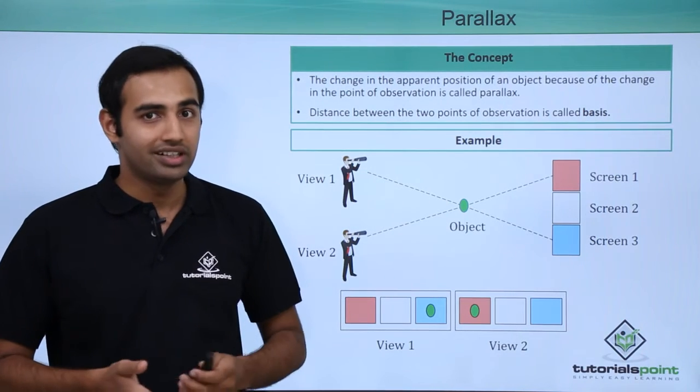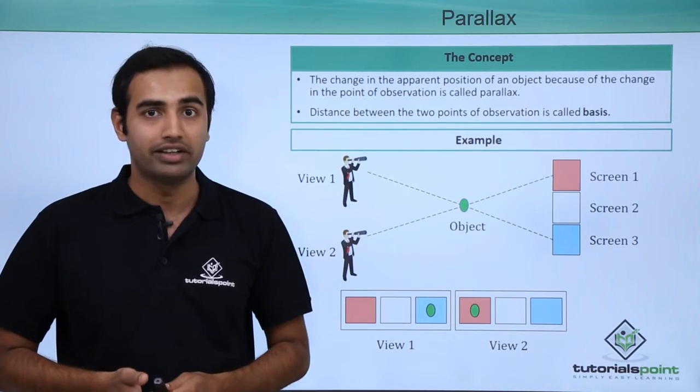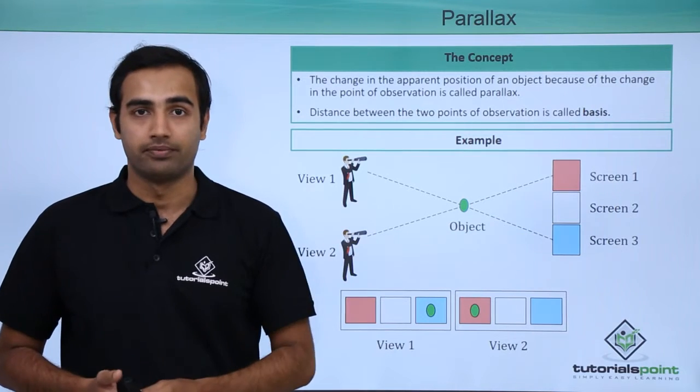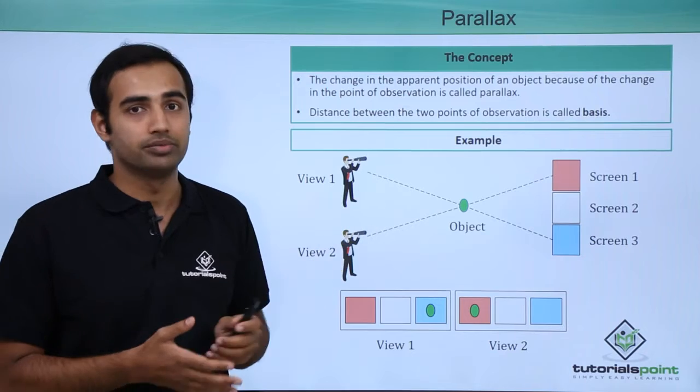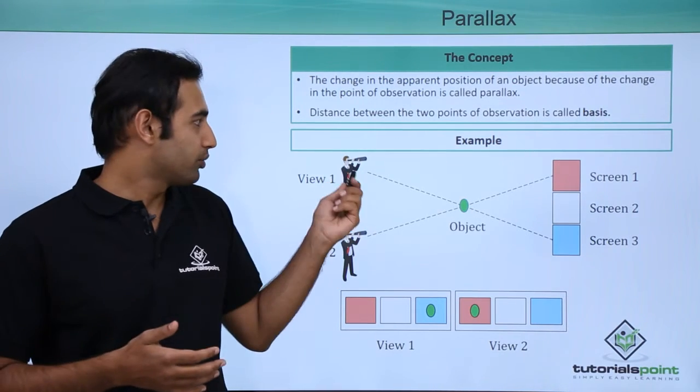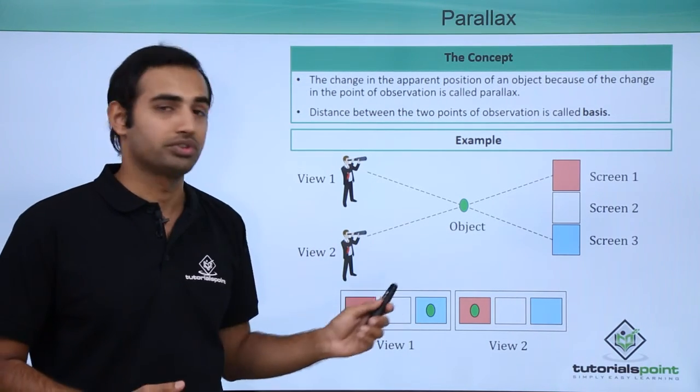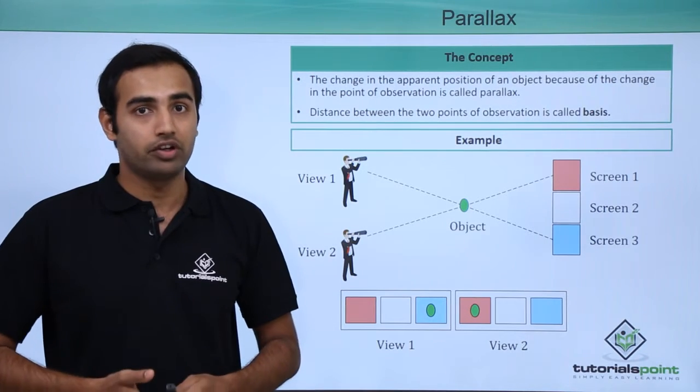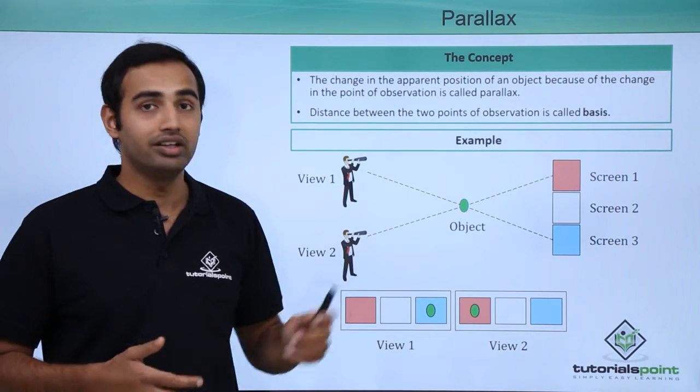We have an object shown in green color over here which is kept in front of a screen which is white in color. On the adjacent sides of the white screen we have red screen and blue screen. Now we have two observers, one standing here observing the object and second standing here observing the object. When the first observer sees the object it appears to him as if the object is in front of the blue screen. Now when the second observer observes the object it appears to him as if the object is on a red screen.